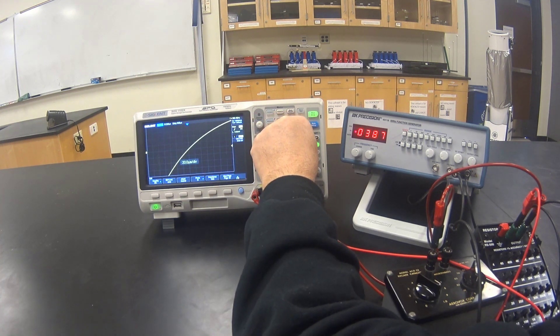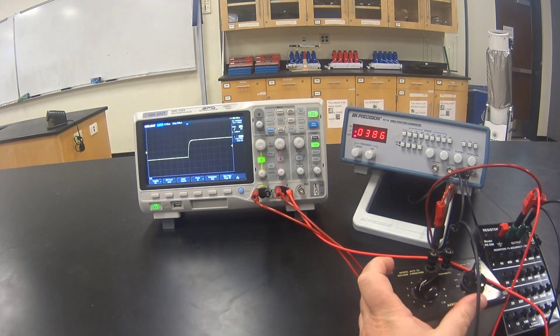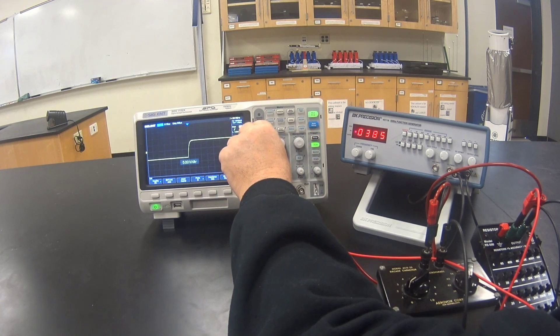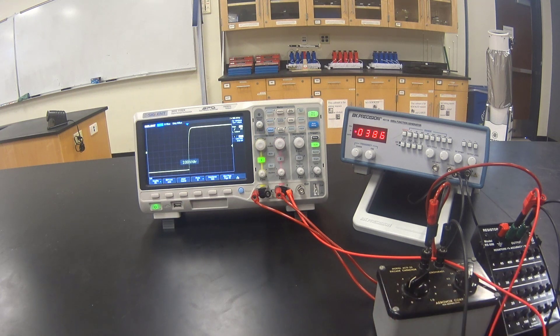Adjust the vertical and horizontal display knobs until you get a signal that looks something like this on the screen. Go ahead and adjust the vertical to mostly fill the screen with your signal.